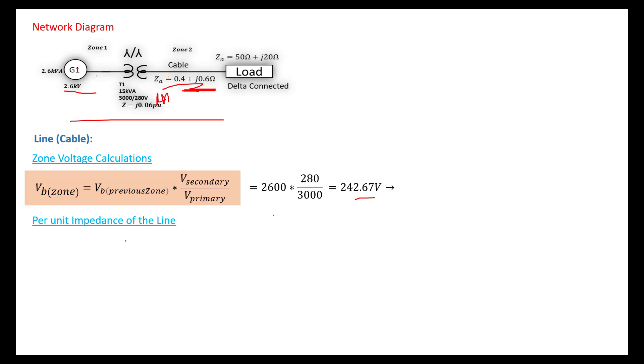Now get your per unit impedance of the line since you know the zone voltage. The per unit is given by Z per unit of the line equals Z_A line over Z_B. Z_A line is the actual impedance of the line, the inductive impedance here, 0.4 plus j0.6 ohm. What is Z_B, the base impedance? Before we get to Z_B, we have to first convert the actual impedance Z_A to polar form because it's given in rectangular form. We convert it to polar form using a calculator.